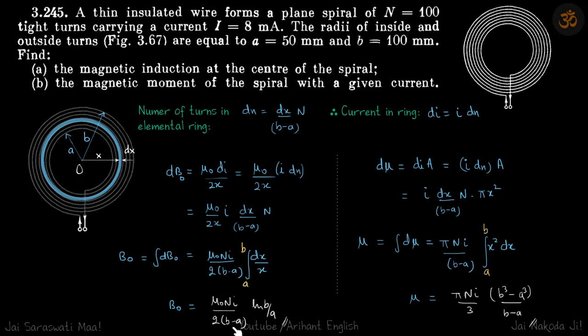Now magnetic moment because of this same loop is di into area, where area is the cross section area pi x square. So di is again i dn, and dn is this thing, so we get i times this, times area pi x square.